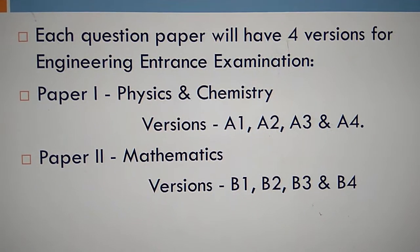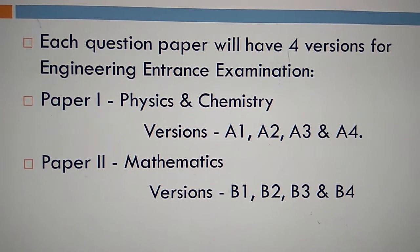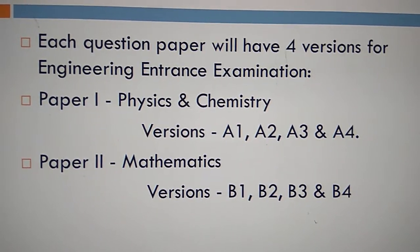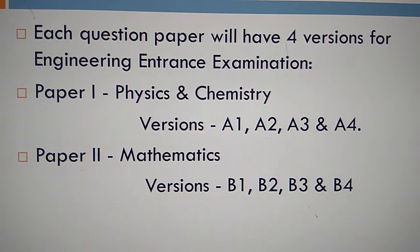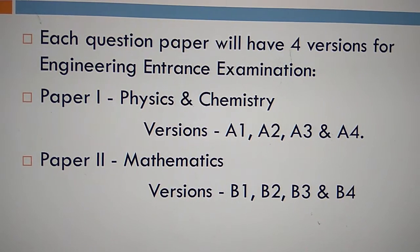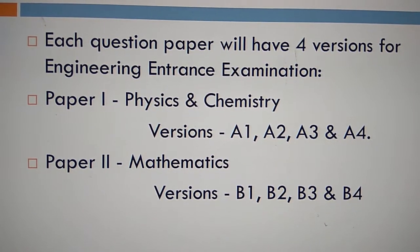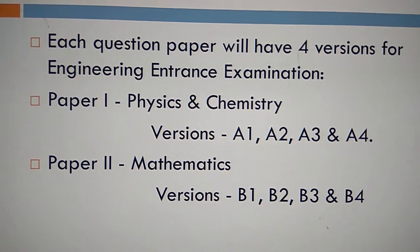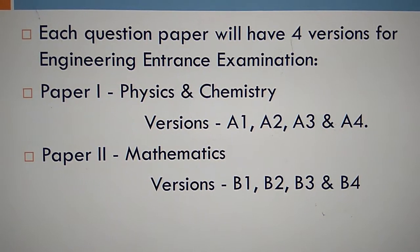Each question paper will have four versions. For engineering entrance examination Paper 1 — Physics and Chemistry — there are versions A1, A2, A3, and A4. For Paper 2 — Mathematics — there are four versions: B1, B2, B3, and B4.